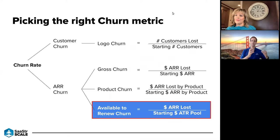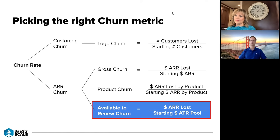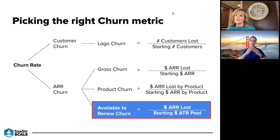The first rule: what's the right churn metric to look at? At the highest level you can look at customer churn — how many customers are we losing — or ARR churn — how much annual recurring revenue are we losing. It's interesting to look at both. Losing customers is not a healthy sign and you want to get in front of that. But it's also important to look at the ARR side. Larger customers tend to be more sticky, so our customer churn rate is sometimes a little higher than our ARR churn rate due to a longer tail of smaller customers.